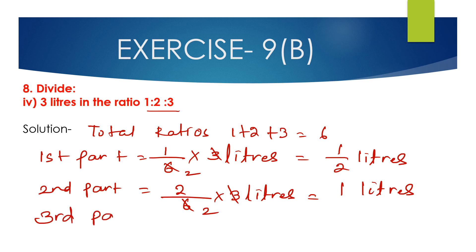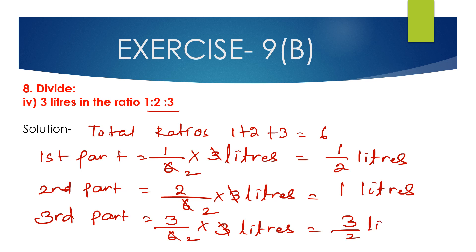The third part is 3 divided by total ratio 6, multiplied with 3 liters. Canceling 3 and 6, we get 2, so 3 divided by 2 is 1.5 liters. So dividing 3 liters in the ratio of 1 is to 2 is to 3: the first part is half a liter, the second part is 1 liter, and the third part is 1.5 liters.